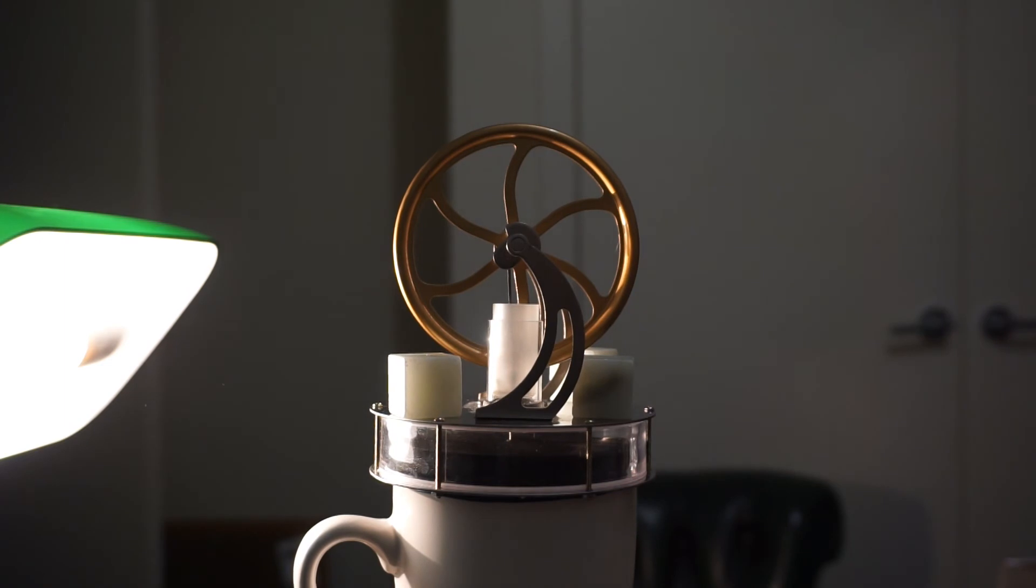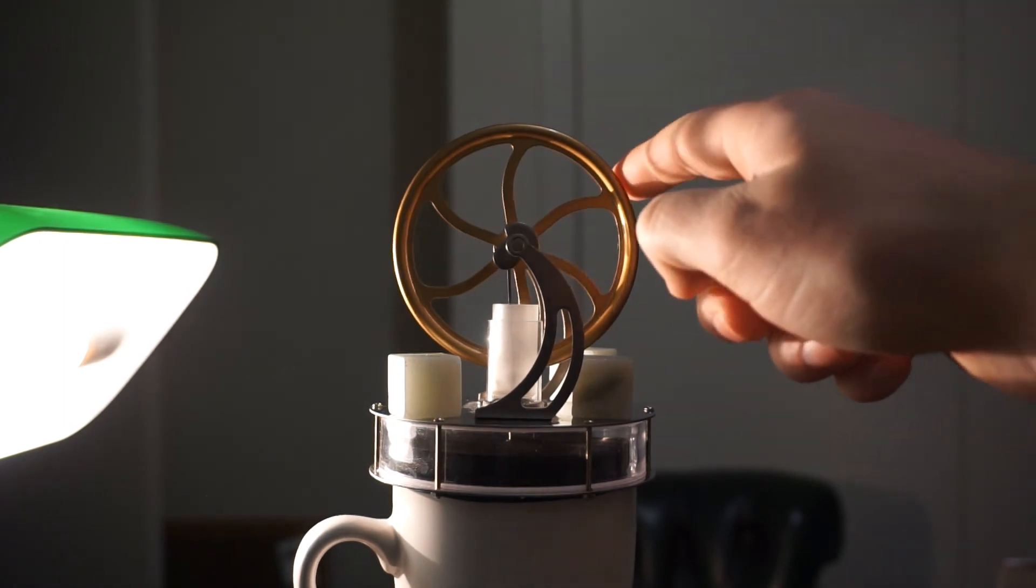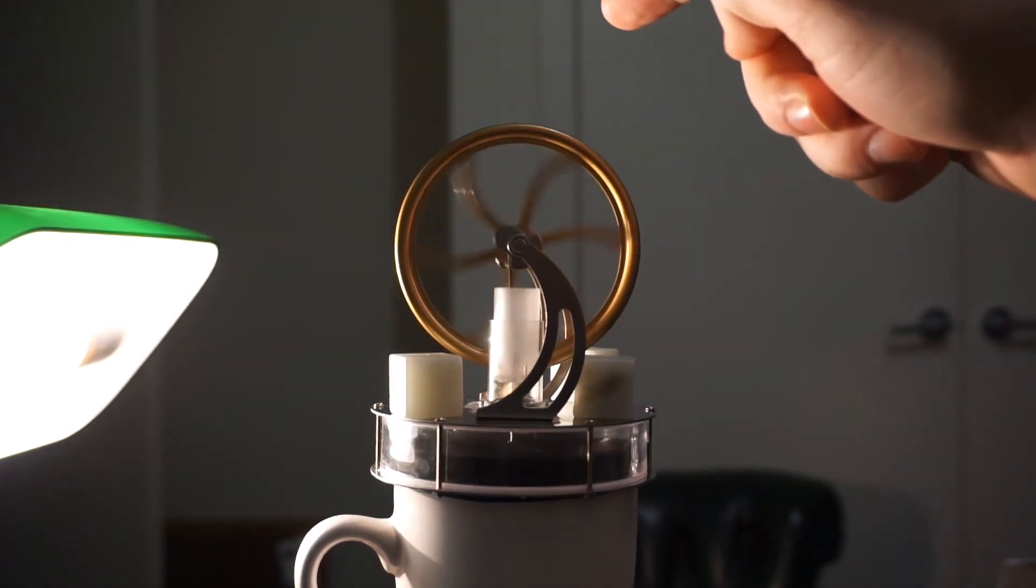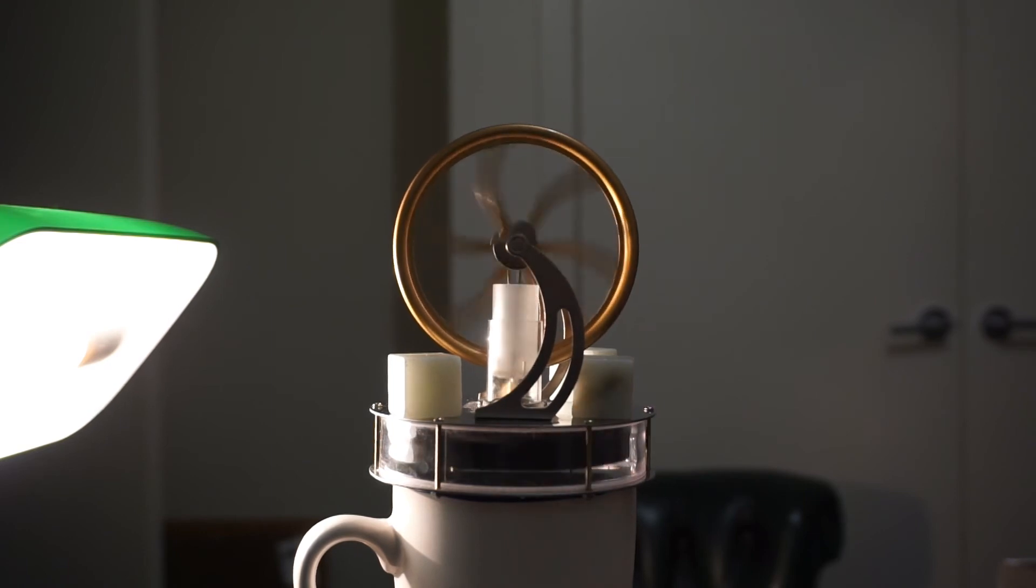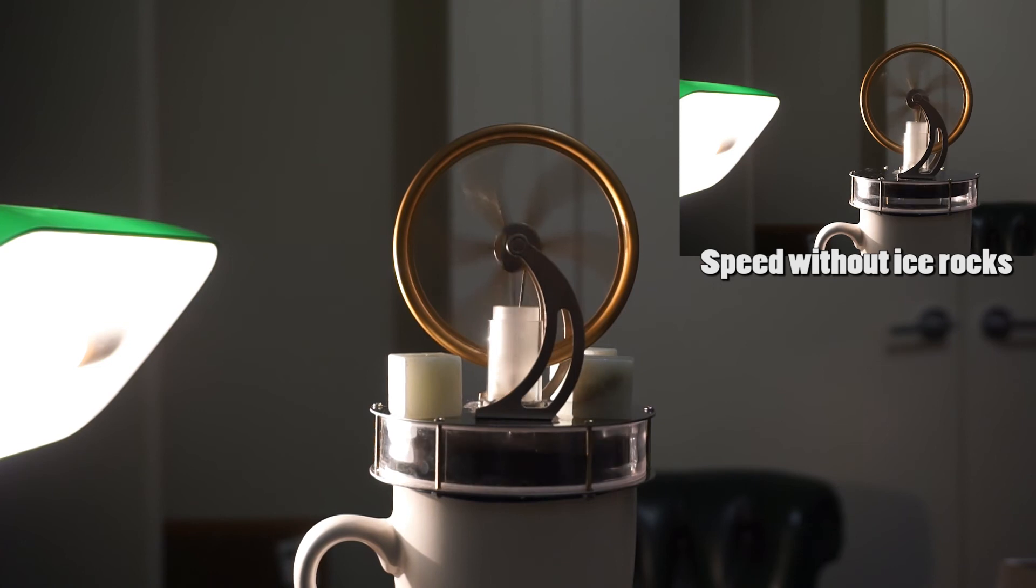So these cubes are made of stone and I've had them in the freezer for a long time and they're really, really cold. So I put them on the top plate and so the top plate will be really cold. The bottom plate still has that hot steam. So there's a huge temperature difference and we'll see that the wheel spins a lot faster now because there's a much bigger temperature difference between these two plates.